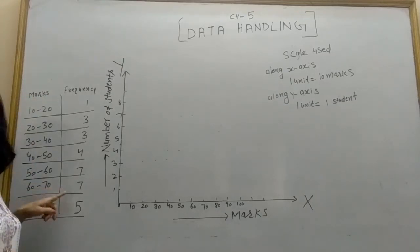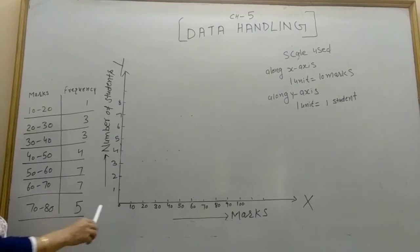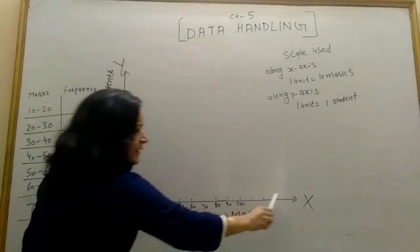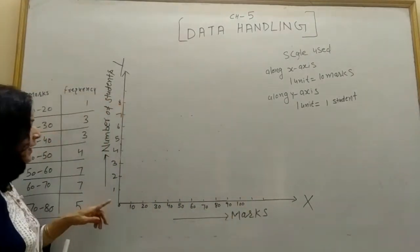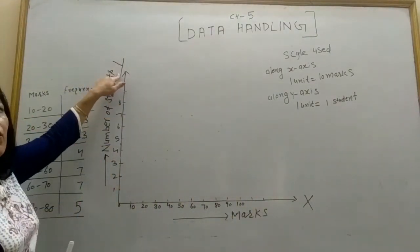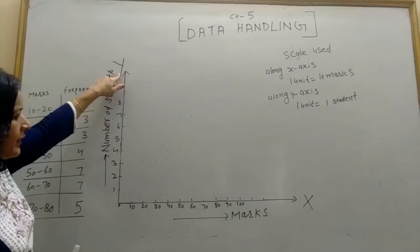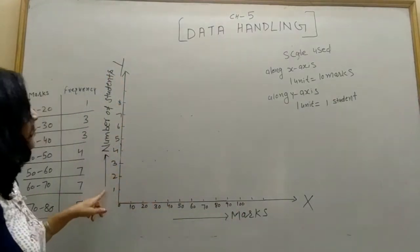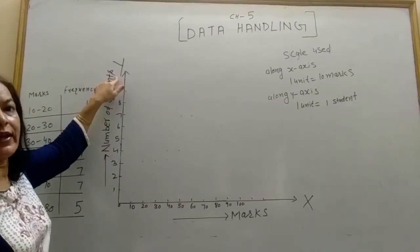To represent this data in the form of a graph, we will draw here two lines. One along the x-axis, a horizontal line which is called x-axis, another vertical line called y-axis. We represent marks along x-axis and number of students along y-axis.